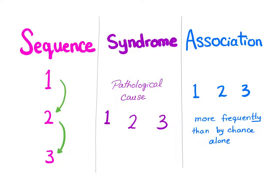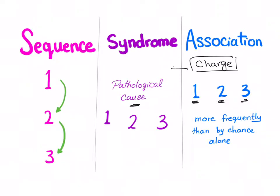For example, CHARGE was first described as an association — different findings but no identifiable pathological cause. After a problem in the CHD7 gene was described, the name was changed from CHARGE association to CHARGE syndrome.